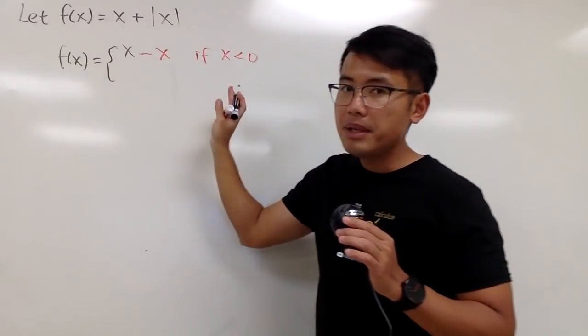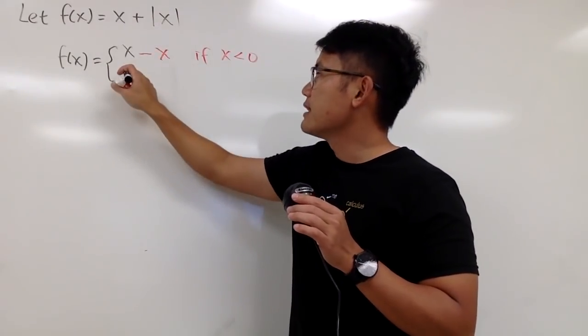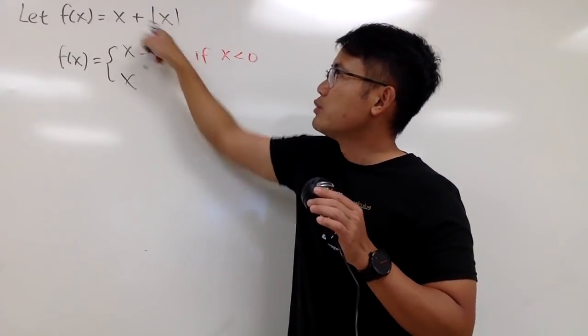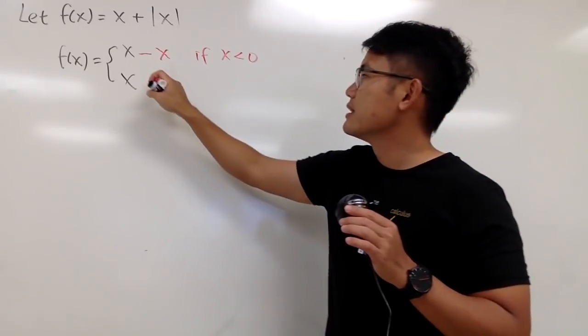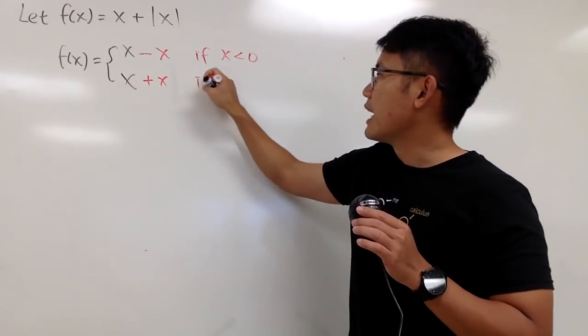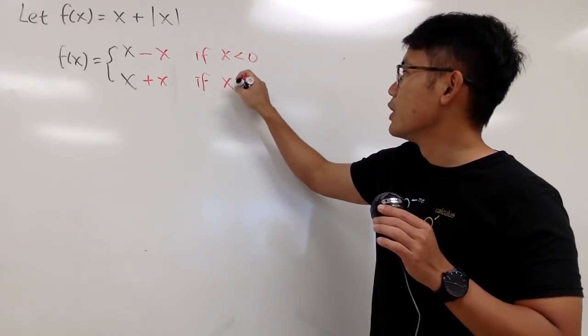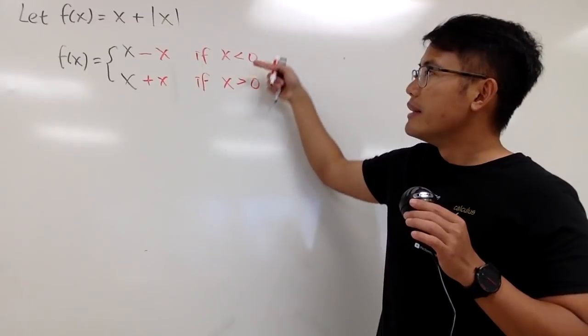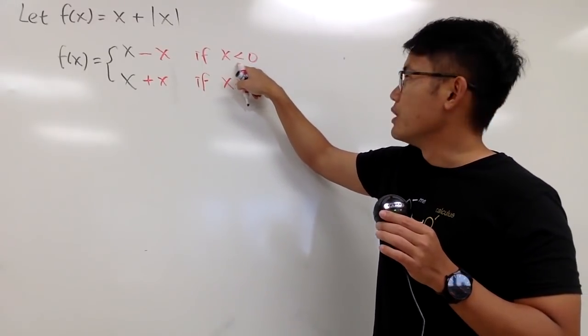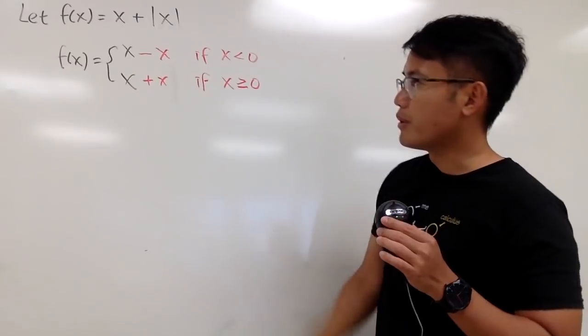And then the second piece is that I will keep this x, but we know this right here is positive x if the inside is non-negative. And I'll write it down as x is greater than 0. And technically, it doesn't matter where you put the equal sign, I will just put it down right here.